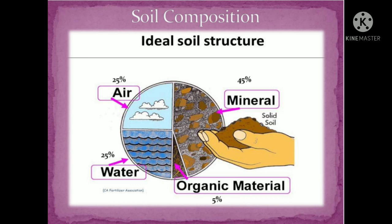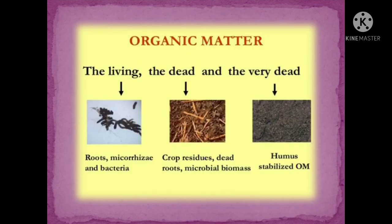This composition varies slightly from place to place, with different places having different compositions. About 5% of organic matter consists of living, dead, and very dead organic materials like crop residues, dead roots, microbial biomass, roots, bacteria, and humus. That's all for today's lesson.